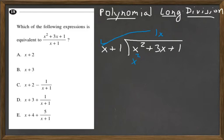And 1x times 1 is 1x. Now, just like in regular long division, we're subtracting that. This ends up being 2x. Then we come back up to the top.